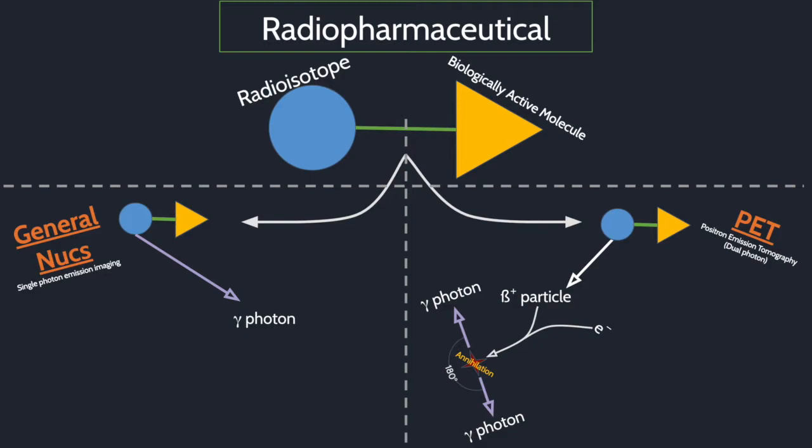This emits two gamma photons 180 degrees away from each other. This 180 degree is extremely important because it allows for a much greater spatial resolution. Notice that it uses two photons, whereas general nukes uses a single photon.